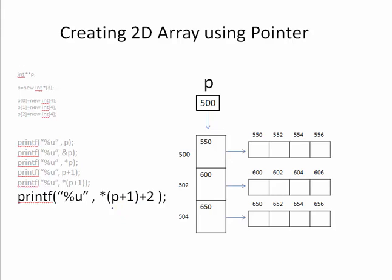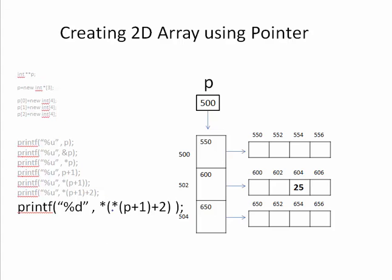*(P+1) gave us 600, which is the base address of that array. Plus 2 means the second location in that array, which is 604. So *(P+1)+2 gives 604. Then applying another asterisk: *( *(P+1)+2 ) gives the data present at address 604, which is 25. The general syntax is: *(*(P+i)+j) is the same as writing P[i][j], which can be used to access any location.